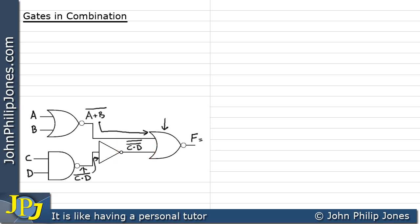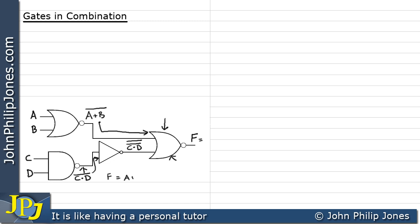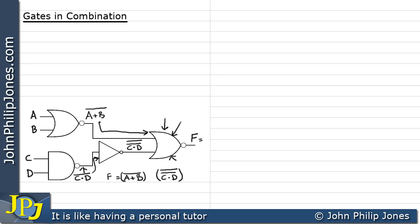The output F is the inputs to the final NOR gate, NORed together. The first input is NOT(A or B). The other input is C and D, NOTted and then NOTted again. We OR both of those inputs together, then NOT the lot — because this is a NOR gate, meaning OR the inputs and then NOT them, placing the NOT bar straight across the top.